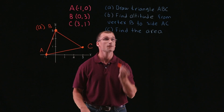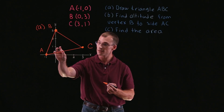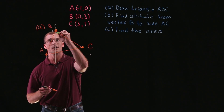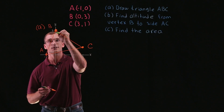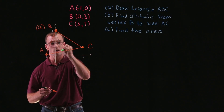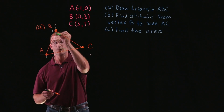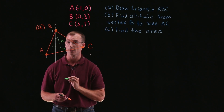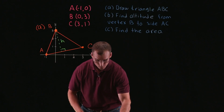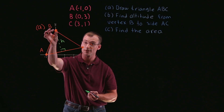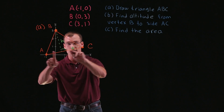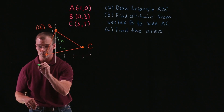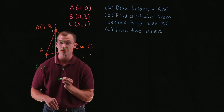For part B, we want to find the altitude from vertex B to side AC. The altitude, remember from geometry, is the distance of the line perpendicular from point B to line segment AC. We'll call that distance H. Now, this altitude or distance is essentially just the distance from a point to a line segment — or if we think of the line extending in our xy-plane, it's the distance from a point to a line. So for part B, we're essentially finding the distance from a point to a line.